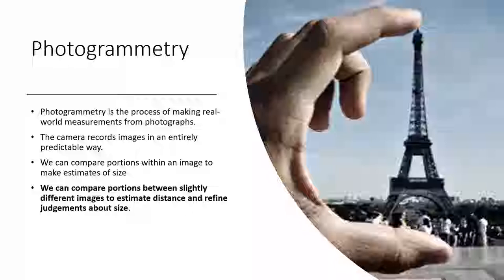There aren't a lot of surprises — cameras record images in a very predictable way, and that means it's actually pretty easy to recover metric information from a photograph, meaning what you're seeing is a real reflection of what the object is. We can do this in two ways: we can compare portions within an image to make estimates of size, so even a single image is often quite useful for making measurements.